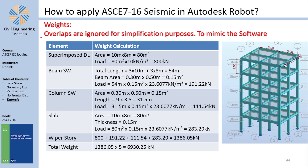First of all we need to calculate the weight. Overlaps are ignored — I know the beam is partially overlapped with the slab and column, but I'm ignoring that for simplification. The superimposed dead load is the slab area of 10 by 8 meters multiplied by 10 kN/m², giving 800 kN. The beam self-weight uses the total beam length: 3 times 10 m plus 3 times 8 m, because there are three beams of each span length, again ignoring intersections.